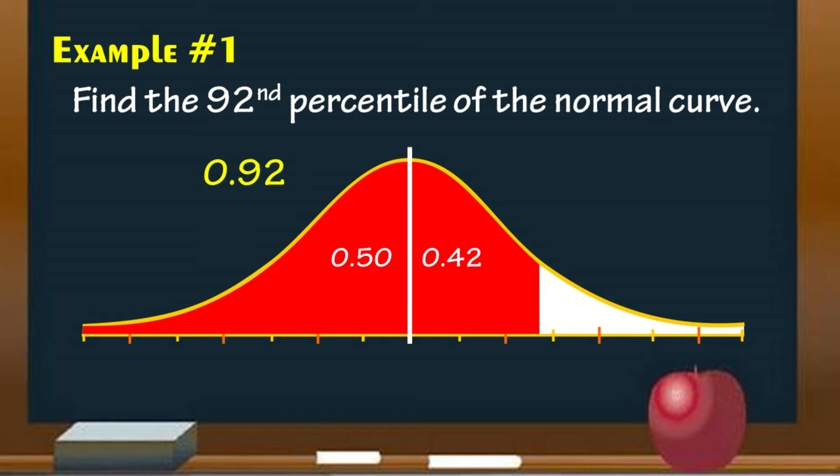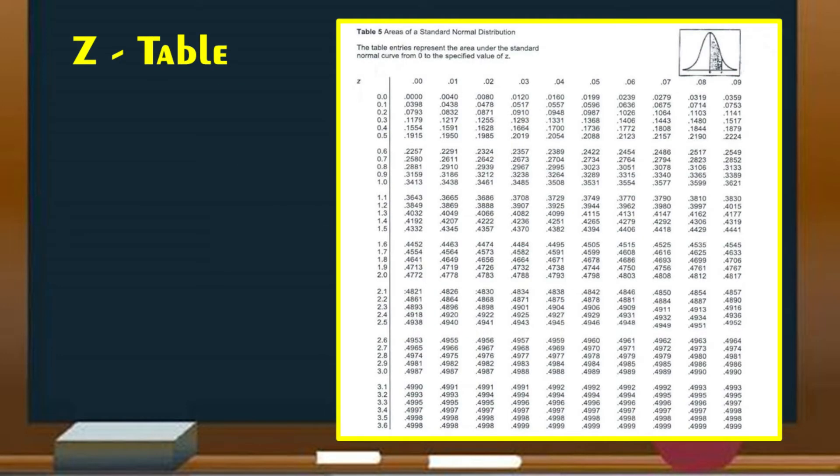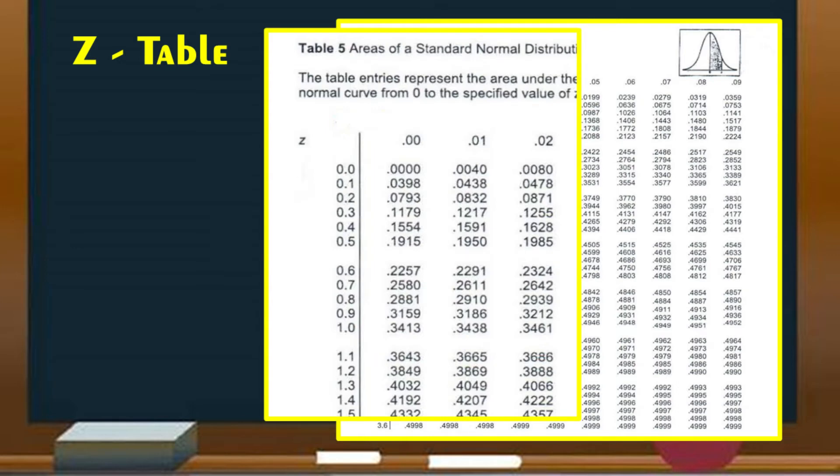This time, locate 0.42 or 0.4200 from the Z table to get the Z value of the percentile. If 0.4200 is not found from the Z table, get the nearest value.